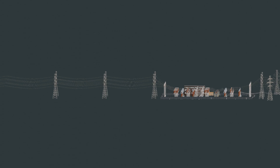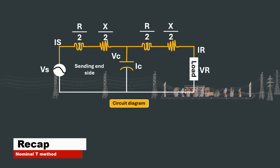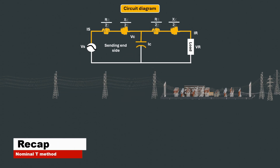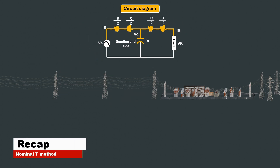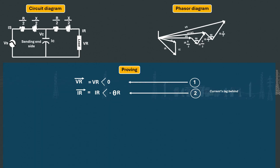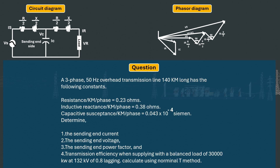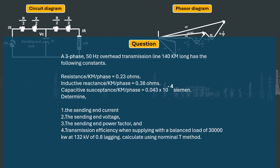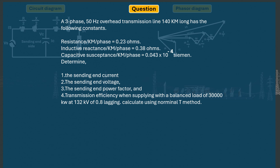Welcome to another informative series brought to you by OTRUO. Last time, we analysed an equivalent circuit diagram using the nominal T method. An equivalent phasor diagram was derived while making reference to the circuit, and we used the phasor diagram to prove some mathematical formula. Finally, we used the formula derived to solve medium transmission line using the nominal T method.